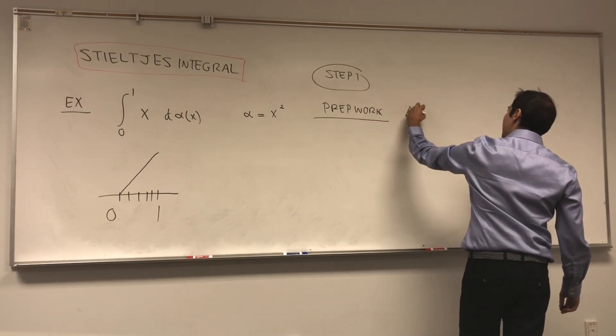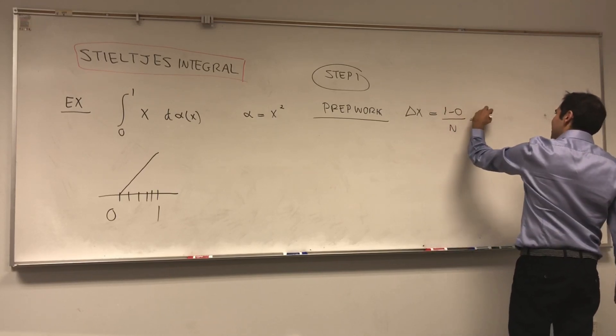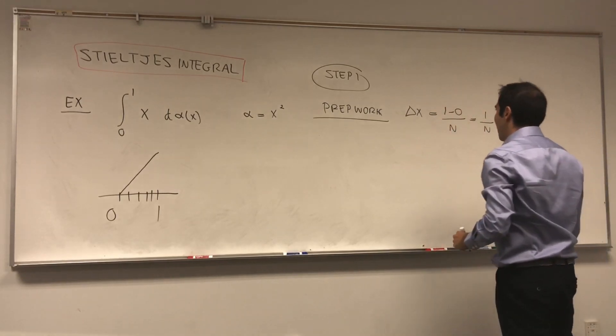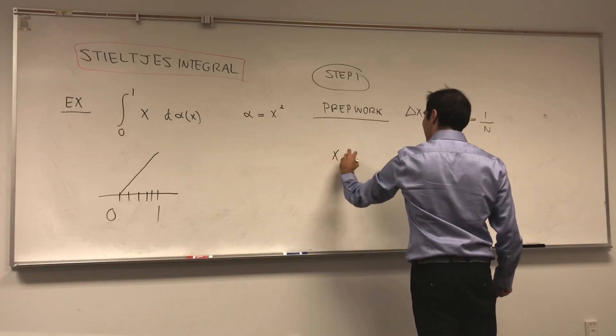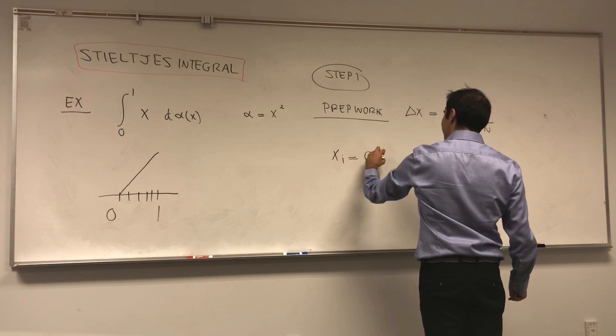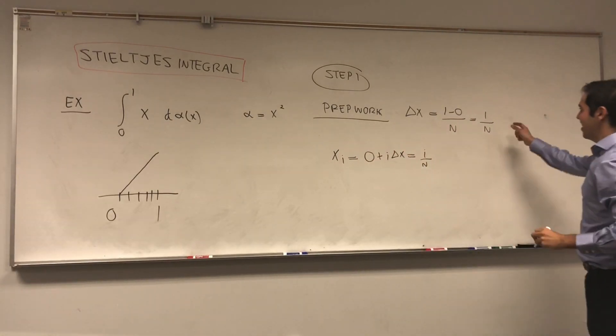Delta x, that's, you know, 1 minus 0 over n, and that's 1 over n. And I would, one second, and then x_i, that's, you know, 0 plus i delta x, and that's i over n. Okay.